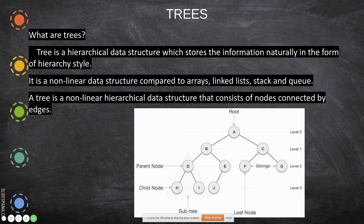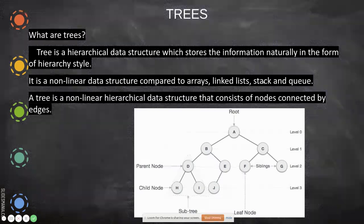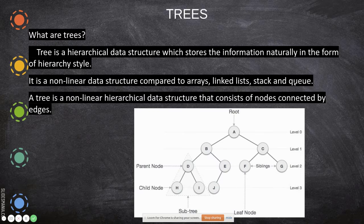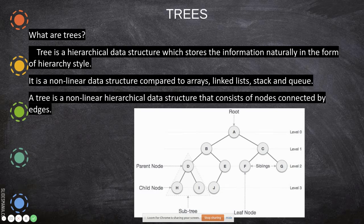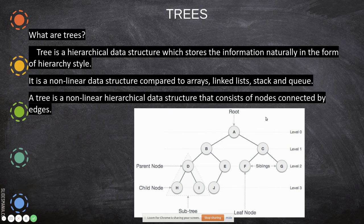In a linked list, using that next pointer you access the next node and so on — linear fashion only. If you take a stack, the value which is present at the top of the stack only you can access. For a queue, you can access only from the front and you can add only at the rear. They follow a linear fashion. In order to access data at the end of the stack you have to pop all the elements. Same way with a queue — if you are accessing a particular data then you have to cross all the nodes before it, so time complexity increases.